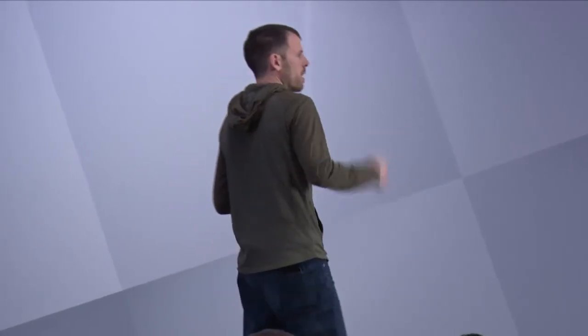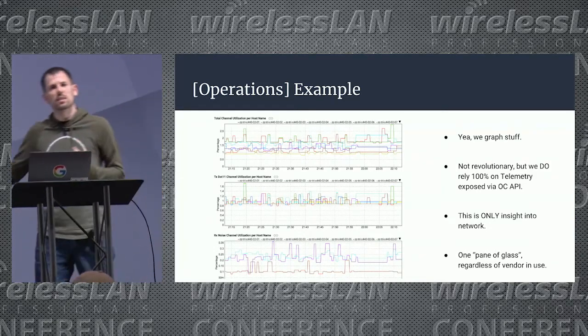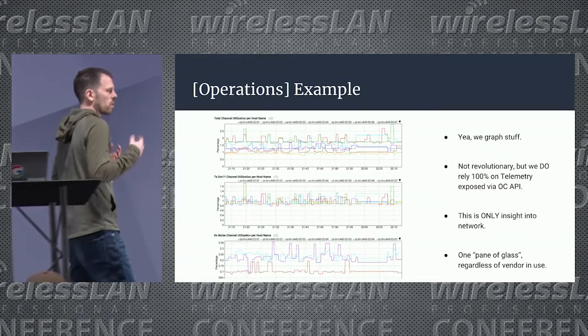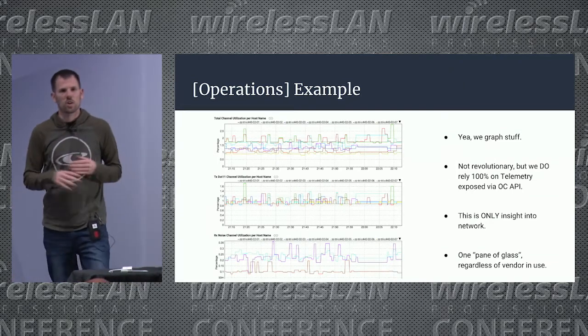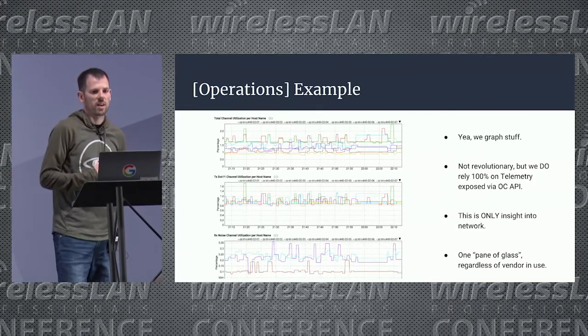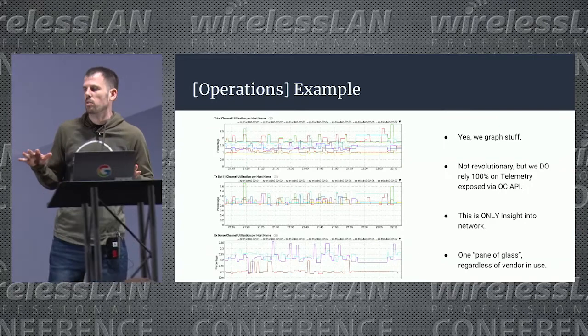We monitor in a vendor-neutral way. We access APs programmatically, get the telemetry we need, and populate graphs — the same way across all vendors. We deploy multiple vendors without our NOC or operations staff even knowing which vendor is on the ceiling. That's the mantra: that's how we truly reach a multi-vendor environment for both deployment and operations. Unless it gets escalated to a vendor-specific software bug, they never know which vendor is deployed.